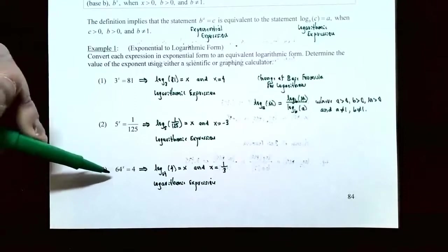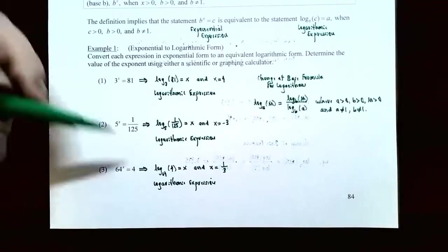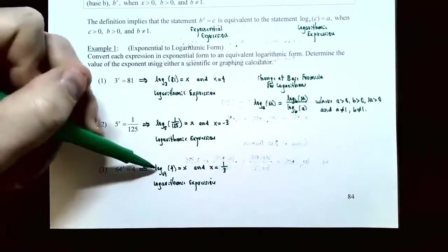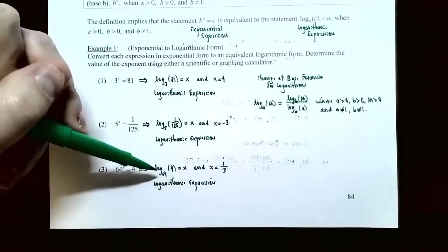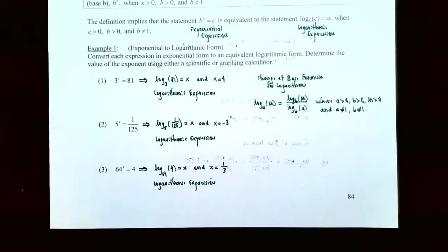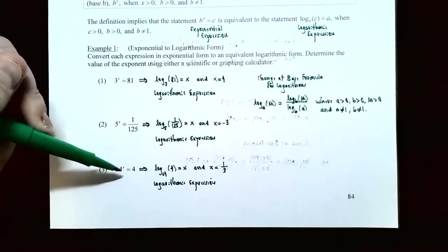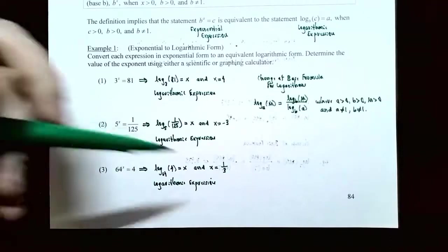Part 3: 64 to the x power equals 4. The equivalent logarithm expression is log base 64 of 4 equals x — meaning what is the exponent on base 64 that gives you 4? We know a fraction power is a root (a radical), so what type of root on 64 gives you 4? It has to be the cube root. So x must be 1/3, because 64 to the 1/3 power gives the cube root of 64, which is 4.